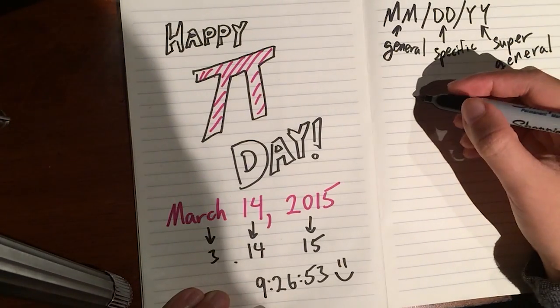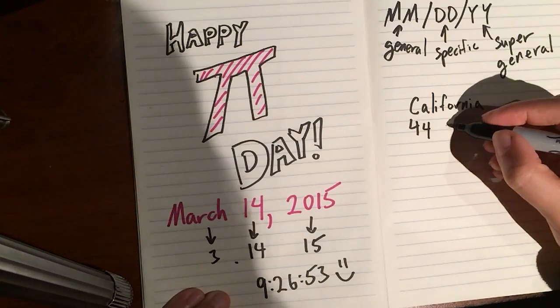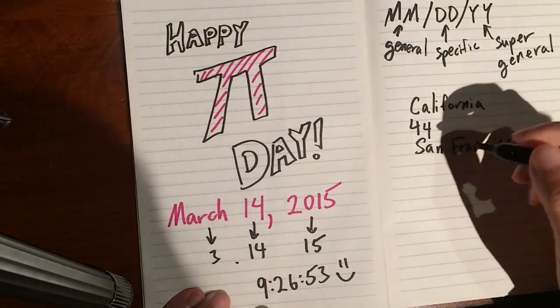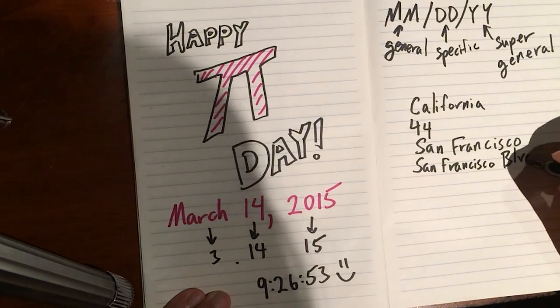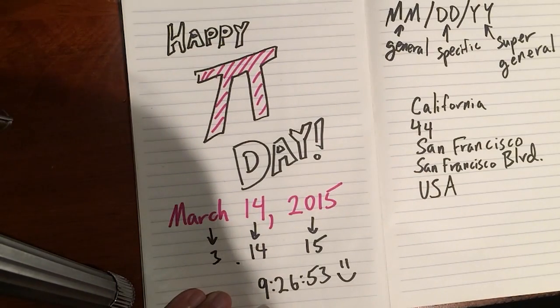It's like giving an address by first specifying a state, then a house number, then a city, then a street, and finally a country. Sure, it gives all the right information, but the ordering is just confused.